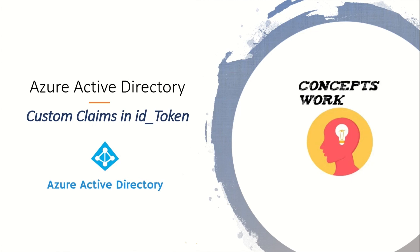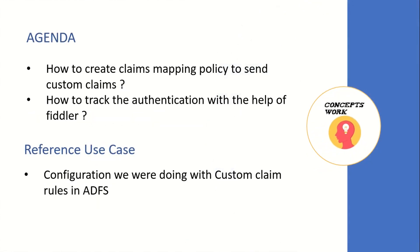Hi guys, hope you all doing well. Welcome back to our series of Azure Active Directory. In this video we are going to talk about how to customize claims that are present in a specific token. There is a very specific reason for mentioning ID token here because the sample application I'm going to use has OpenID Connect implemented as an authentication protocol. The entire agenda of this video will be knowing how to create a claims mapping policy to send custom claims, and then we'll track the authentication token with the help of Fiddler.